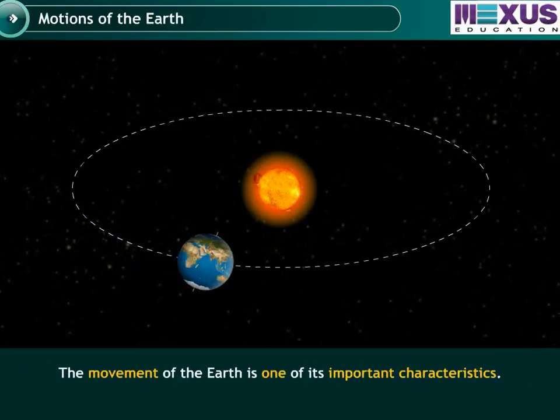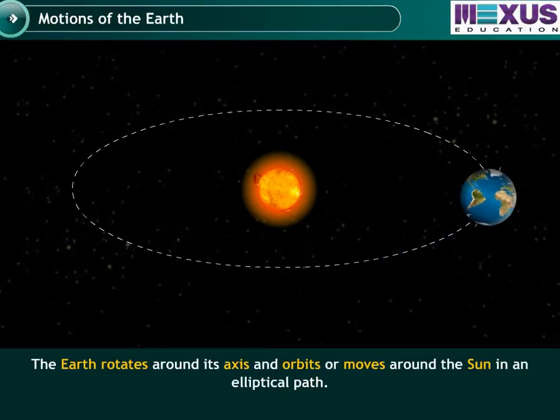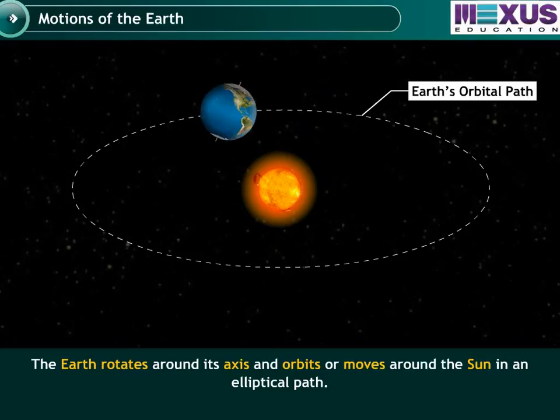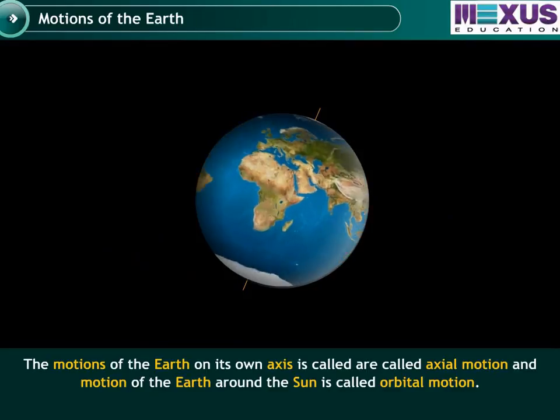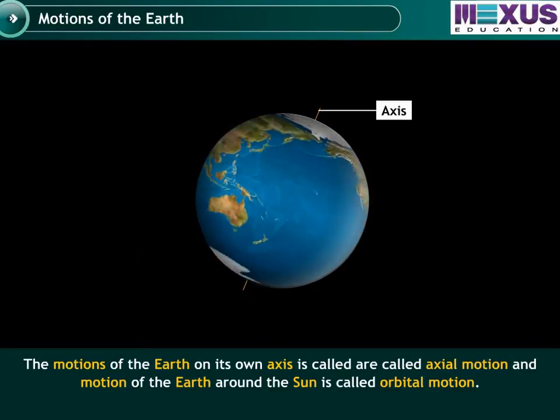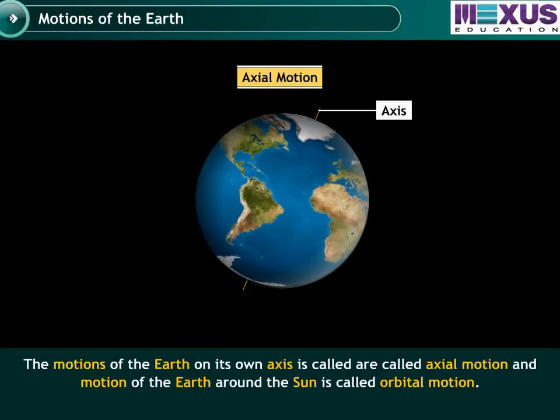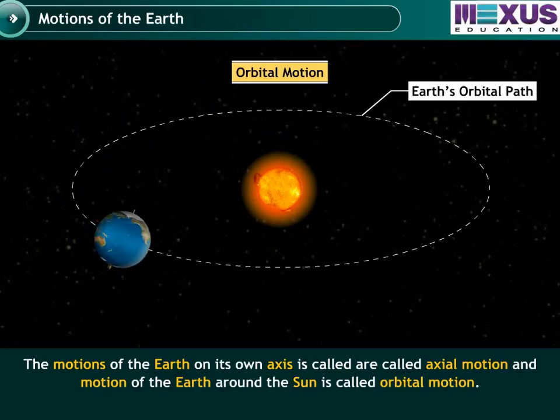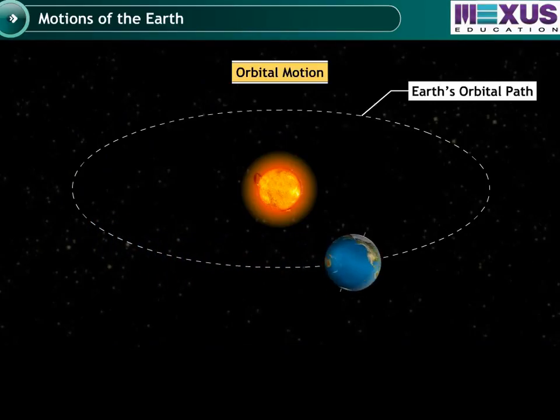The movement of the Earth is one of its important characteristics. The Earth rotates around its axis and orbits or moves around the Sun in an elliptical path. The motion of the Earth around its own axis is called axial motion and the motion of the Earth around the Sun is called orbital motion. Let us learn about the features of these two types of motions.